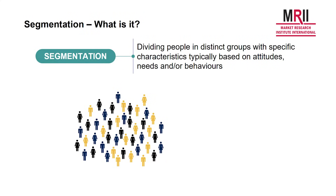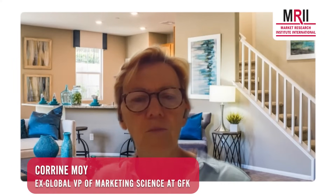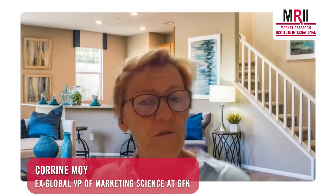We've talked about measuring relationships in our key driver's work. Segmentation is a different approach. It's really about grouping people together based on maybe their attitudes, their needs, their behaviours. What we're doing is trying to create groups of people who are similar to the people within the same group, but different to others.